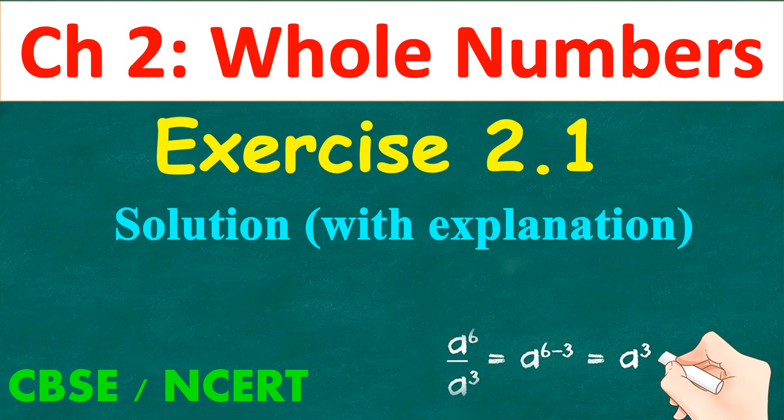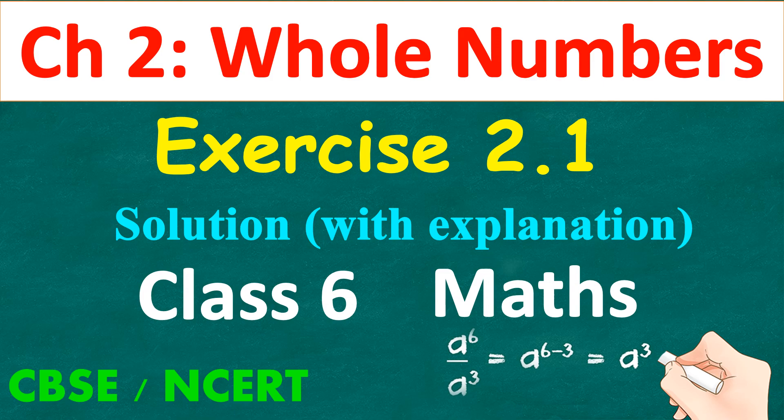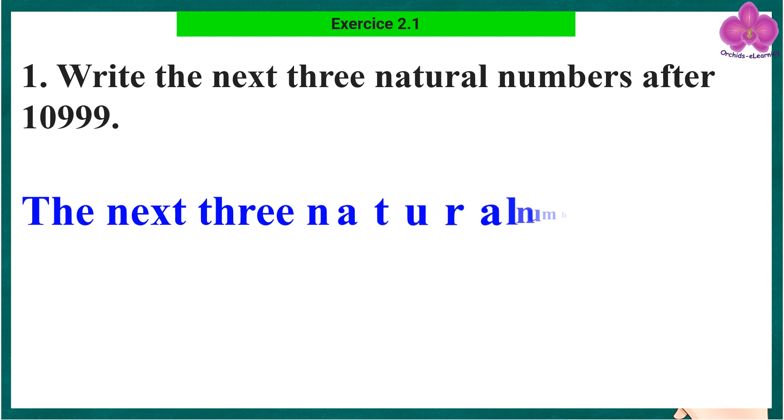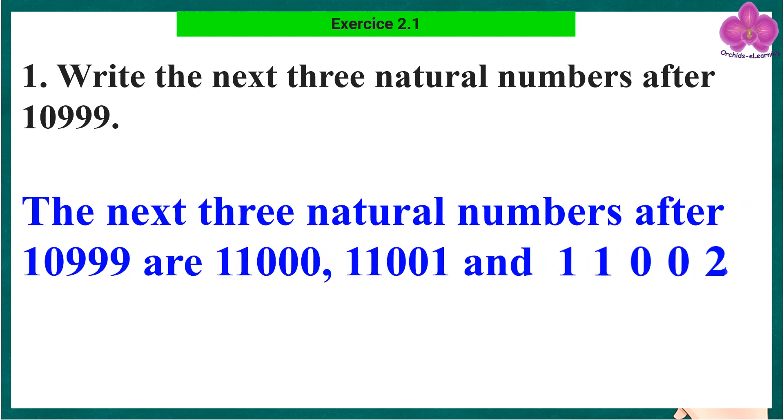Exercise 2.1, Class 6 Maths, Chapter 2 Whole Numbers. Question 1: Write the next three natural numbers after 10999. The next three natural numbers after 10999 are 11000, 11001, and 11002.